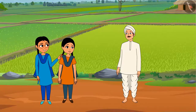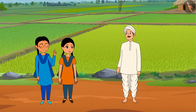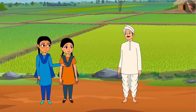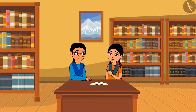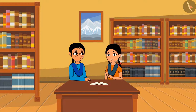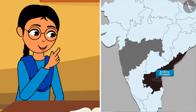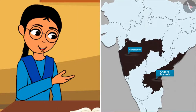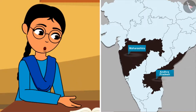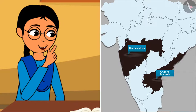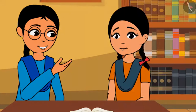Finding this interesting, Nilu suggests going to the local library to learn more after buying the fruits. Both friends buy fruits and go to a nearby library. Minu finds a book called 'Soil Our Resource.' It states that in some parts of India like Guntur in Andhra Pradesh and Maharashtra, the soil is black because of volcanic ash, and this type of soil is very fertile.